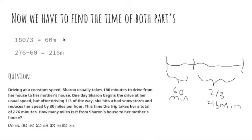Now we have to find the time of both parts. So first, if we find the part of this one third part, it's 180 divided by 3, because here it says usually takes 180 minutes to drive from here to here. So one third is 60, and then this part is 276 minus 60 equals 216 minutes.